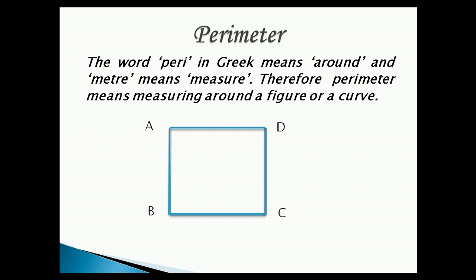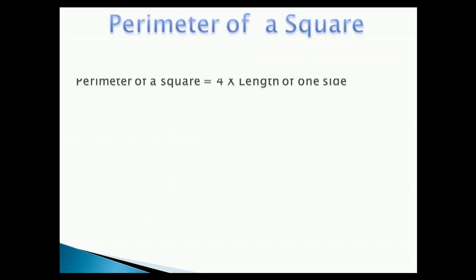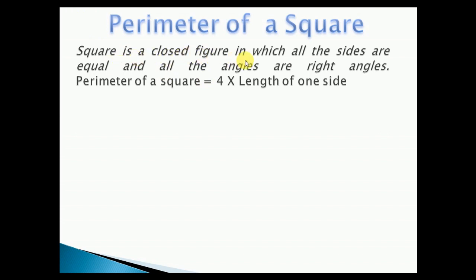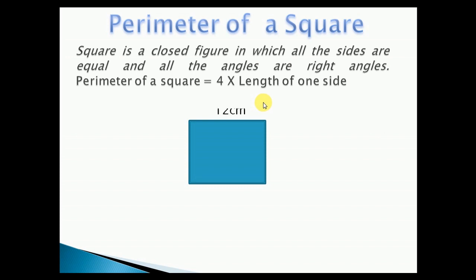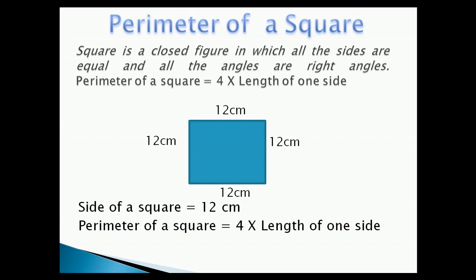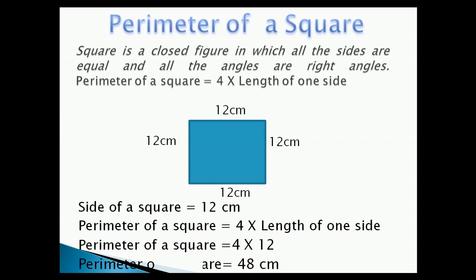This is a square. Perimeter of a square. A square is a closed figure in which all the sides are equal and all the angles are right angles. Perimeter of a square is equal to 4 into the length of one side. This is a square with one side of 12 cm. Perimeter of a square is equal to 4 into 12, which is equal to 48 cm.